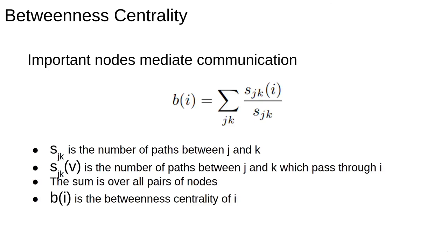Conceptually betweenness centrality is fairly straightforward. We compare the number of paths between two nodes say J and K with the number of paths that go from J to K via node I. If we sum these ratios for all pairs of nodes, excluding paths which start or end at I, then if many paths have to pass through I we'll get a large number.